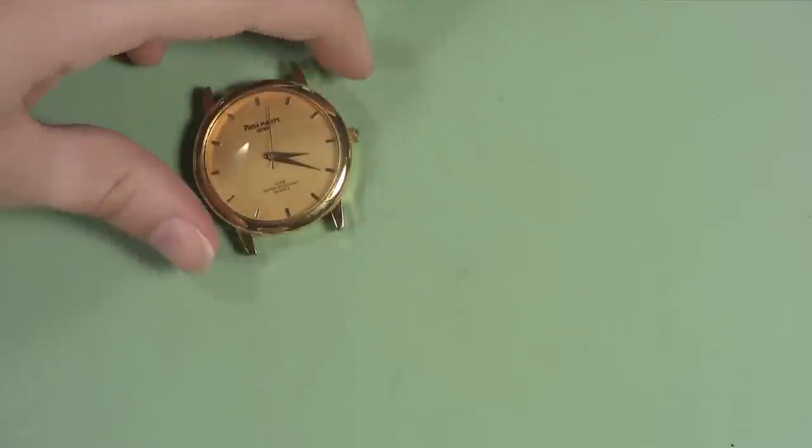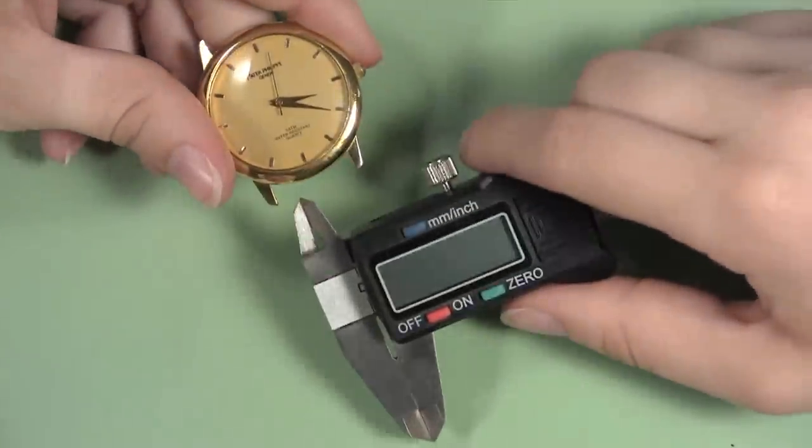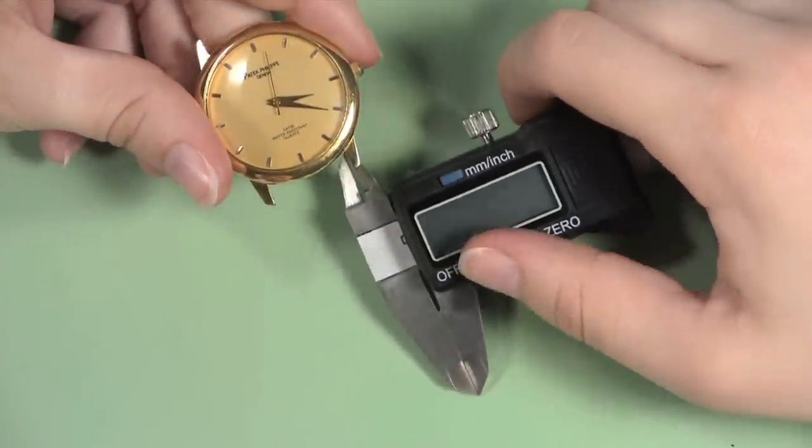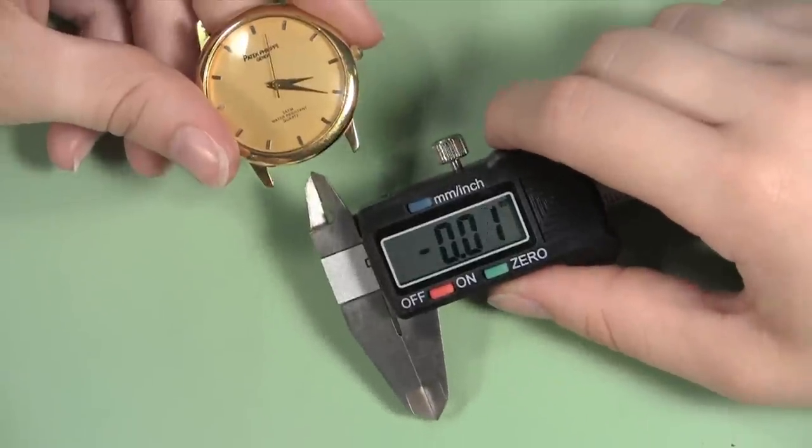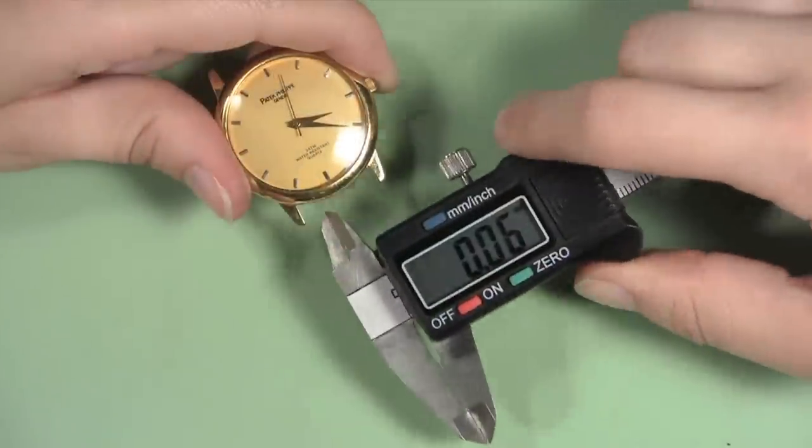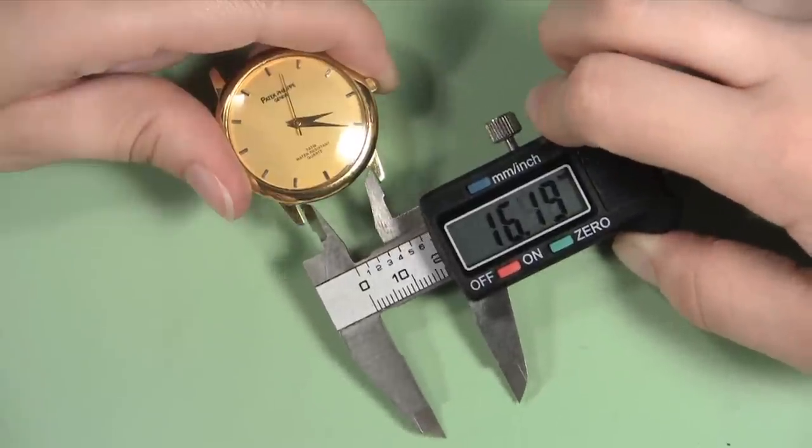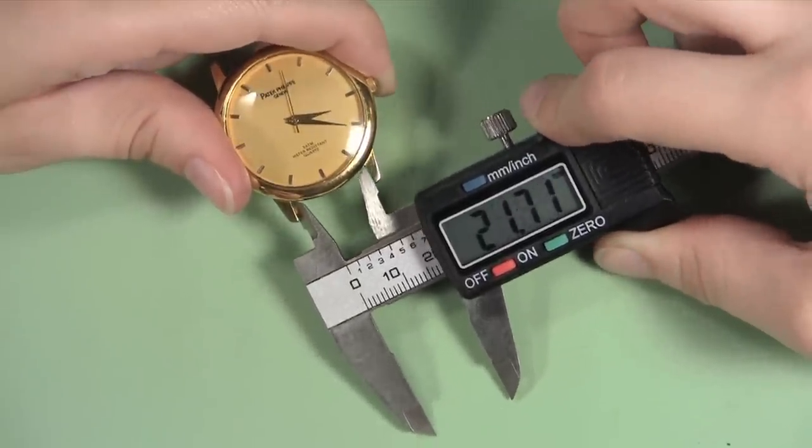Or you can take a digital gauge to measure the distance between the lugs. Take the digital gauge and position the backward opening jaws between the lugs. Open the jaws until they fit snugly between the two lugs and note the millimeter measurement on the gauge's display.